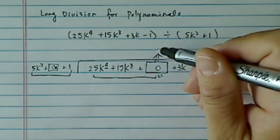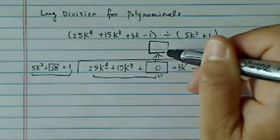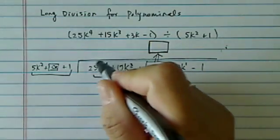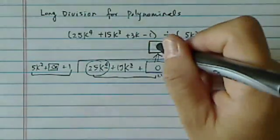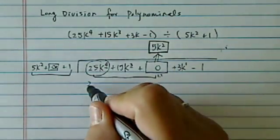Pretend this is you're poking a hole on the roof. So the first term you're going to put in this box is going to be matching this leading term. Obviously, we need a 5k squared over there.